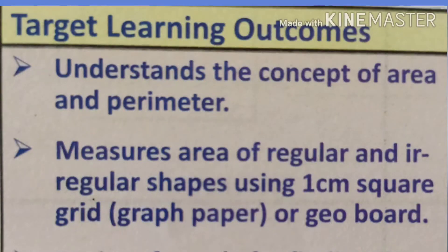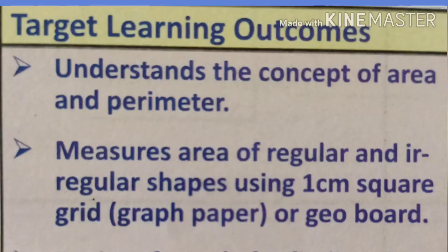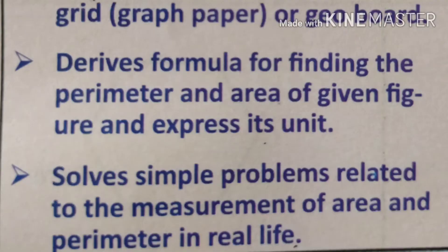Number two: you can measure the area of regular and irregular shapes using a one-centimeter square grid — that means graph paper or geoboard. Number three: you can derive formulas for finding the perimeter and area of a given figure and express its units.